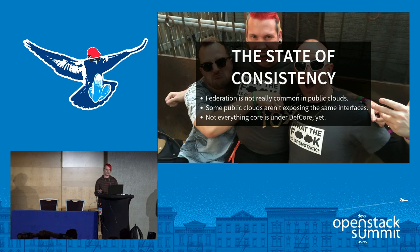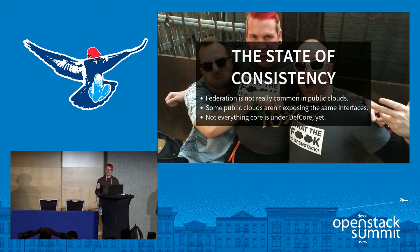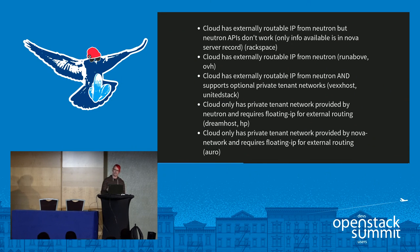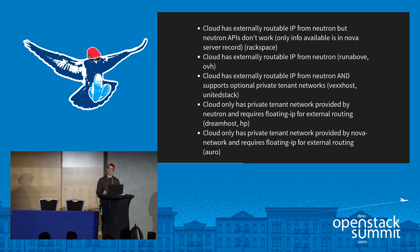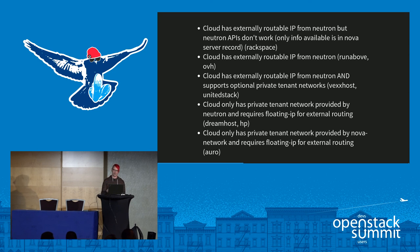However, some of these clouds weren't even exposing the same interfaces for authenticating. Some people weren't even using Keystone — and how can you be an OpenStack cloud if you don't even have Keystone? Nobody can use it. There was also really weird stuff in the client code looking for specific things for certain clouds. Right here is another example of inconsistencies across public clouds: just to get an external IP when you bring up an instance and assign an external IP, there are so many inconsistencies and different things you have to do. This is a comment in the code base of a library called Shade that deals with these inconsistencies.